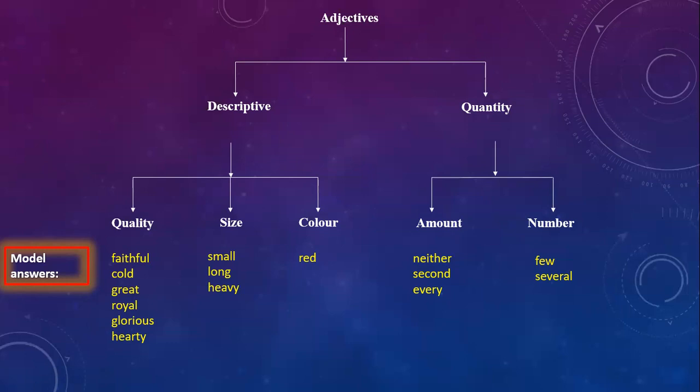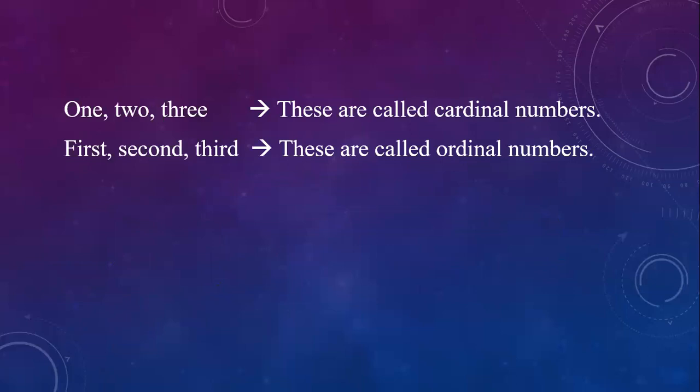For more information on adjectives, refer to your dictionaries and grammar books. I will prepare a special video on adjectives. Numbers like one, two, three, four, five are called cardinal numbers. First, second, third, fourth, fifth are called ordinal numbers.